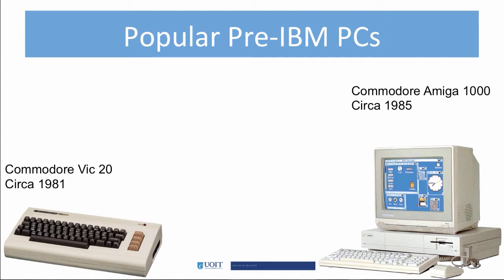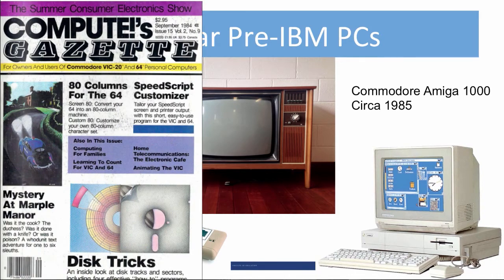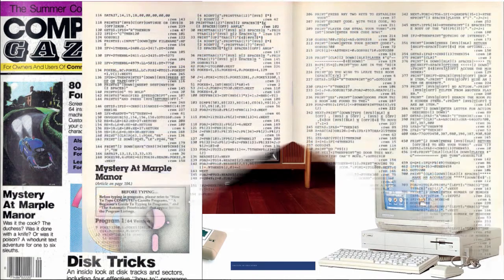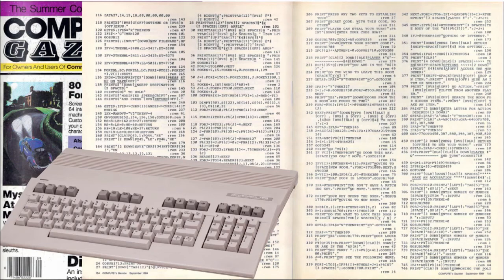The Commodore VIC-20 was my first computer. The CPU was inside the plastic box that holds the keyboard, and it was hooked up to my TV, which was a floor console model. Data was saved on cassette tapes. You could buy game cartridges that fit into a slot in the back of the keyboard, but these were expensive, so I bought computer magazines, such as Compute Gazette, and typed in the code for all the games I played.